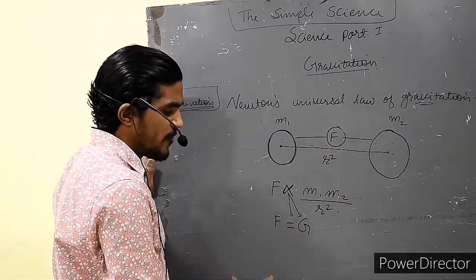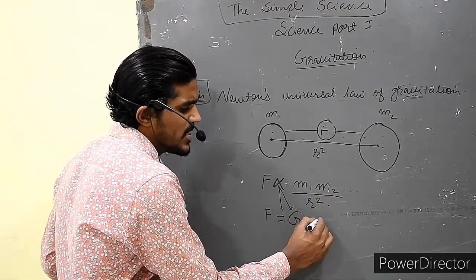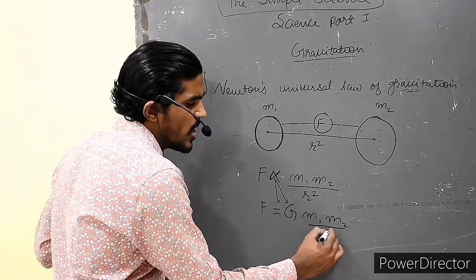Capital G means for gravitation. And the rest of the concept will be the same: M1 into M2 by R square.